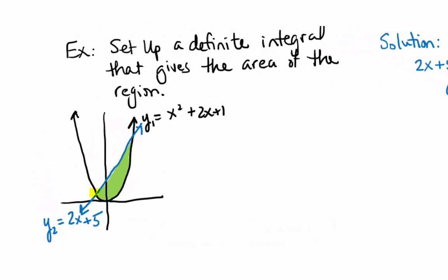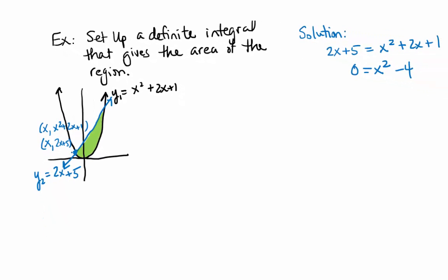Whatever this point is here, it's going to have the coordinates X, 2X plus 5. But it also has the coordinates X, X squared plus 2X plus 1, because it's also on that graph. In other words, the Y values here have to be the same, so set them equal to each other.